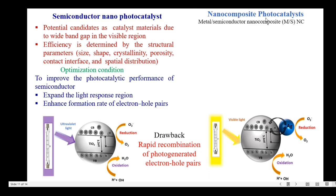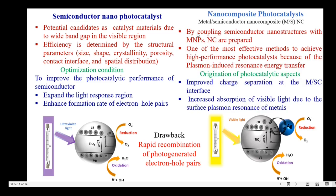The metal-semiconductor nanocomposites are prepared by coupling semiconductor nanostructures with metal nanoparticles. Preparation of nanocomposites is one of the most effective methods to achieve high-performance photocatalysts because of plasmon-induced resonance energy transfer. The improved photocatalytic aspects originate from improved charge separation at the metal-semiconductor interface and increased absorption of visible light due to the surface plasmon resonance of metals. Therefore, decorating semiconductors with metal nanoparticles reduces the band gap and enables visible light irradiation for the generation of electron-hole pairs.